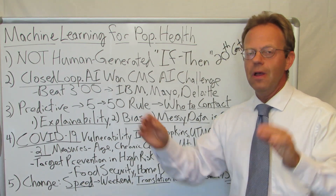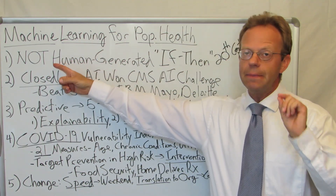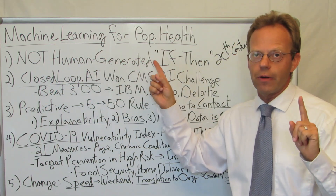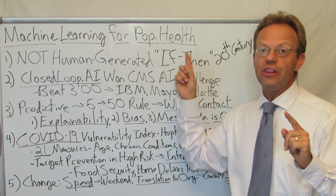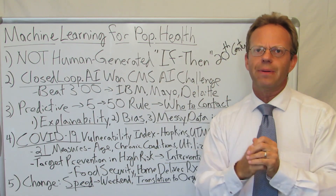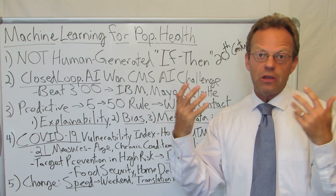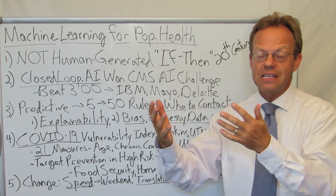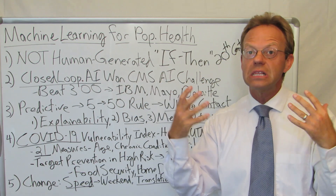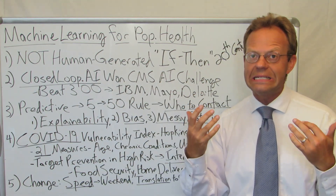So when we talk about machine learning, which is part of AI, keep in mind this is not human-generated if-then statements. You hear the word algorithm, but a lot of algorithms are just if-then statements. In the 20th century we used those all the time: if this happens, then do this. We would tell the software to do that. I was literally taught that in computer camp when I was in third grade in 1984.